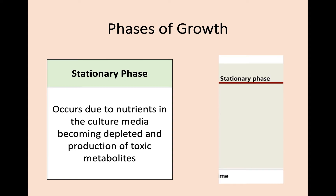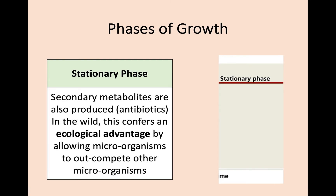As we continue we hit the stationary phase, where there's no real change in the population. This is because the nutrients that were so plentiful in the log phase are now being used up, and also toxic metabolites are being produced. Secondary metabolites are also being produced, such as antibiotics. In the wild, producing your own antibiotics allows microorganisms to outcompete others — we term this an ecological advantage.